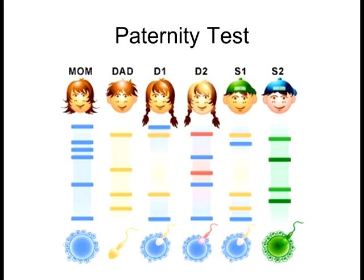Let's do a couple of practice questions with this — go ahead and pull out your clickers. That's how a paternity test is essentially done: you take blood from the mother, blood or cheek swab from the father, and DNA sample from the child. You do the profile on all three of them, and the child needs to have matched up one from each parent to be the biological offspring. The same thing can be done to see if someone's really your sibling — you'll share half of the short tandem repeats statistically with your sibling, not exactly the same but 50% of them.